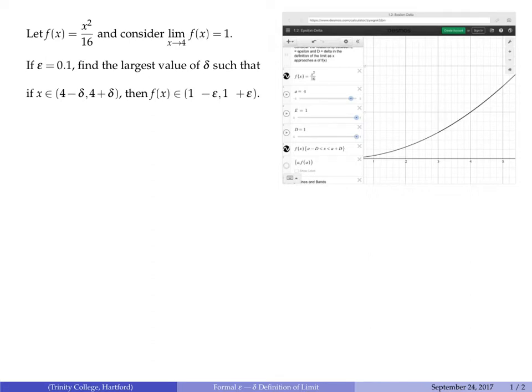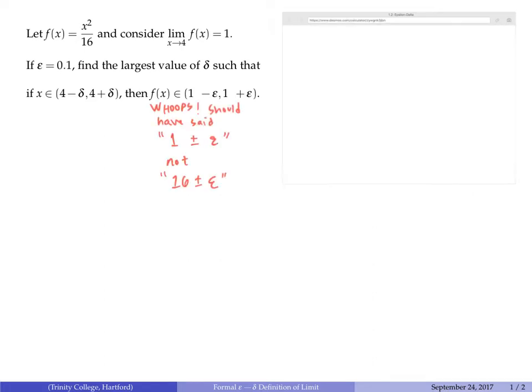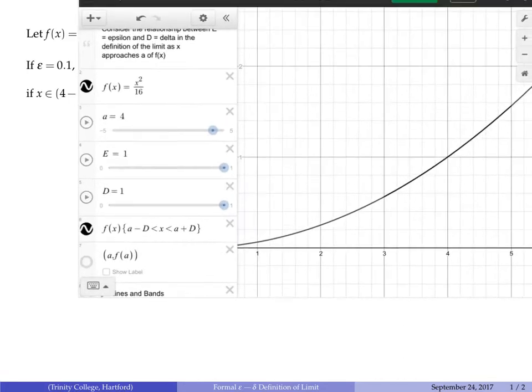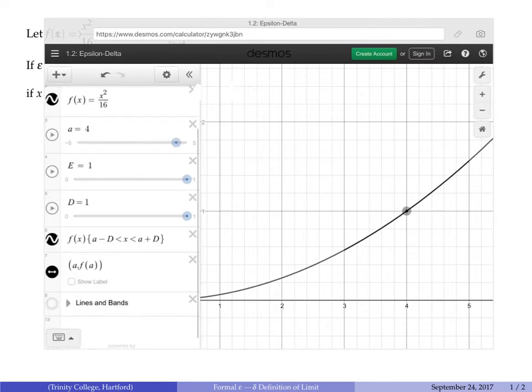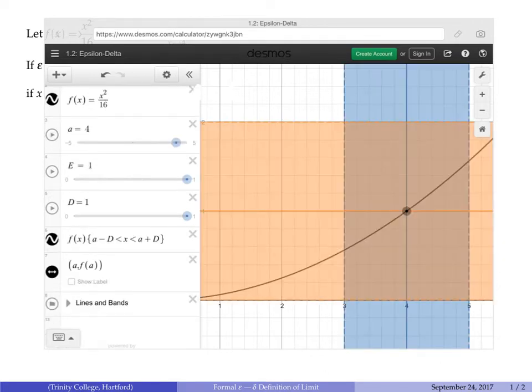So if epsilon equals 0.1, we need to find the largest value of delta such that if x is between 4 minus delta and 4 plus delta, then f(x) is between 1 minus epsilon and 1 plus epsilon. Let's switch to looking at this Desmos graph, and we can turn on the point we're interested in and the horizontal and vertical bands that relate to epsilon and delta.